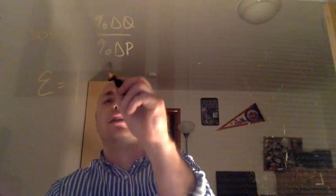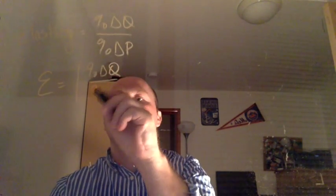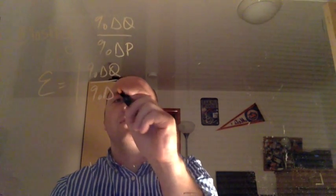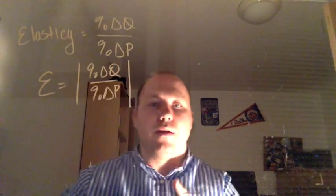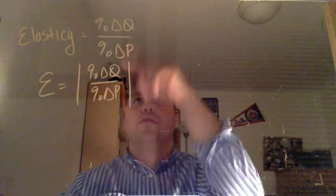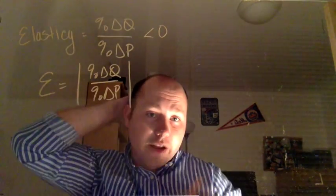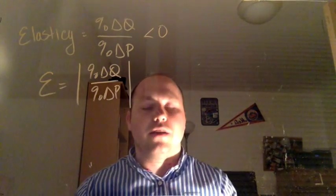So elasticity is going to tell us that. We're going to do the absolute value to make it easier. And that's primarily for one main reason. This relationship is always negative. So this is always less than zero. As price goes up, quantity goes down.